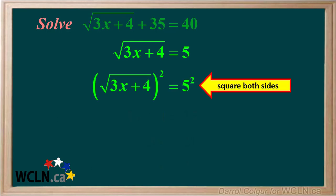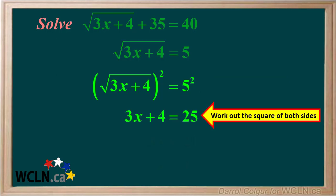Squaring both sides gives us this, so next we need to work out squares on both sides. Squaring the square root of 3x plus 4 gives us 3x plus 4, and squaring 5 gives us 25.